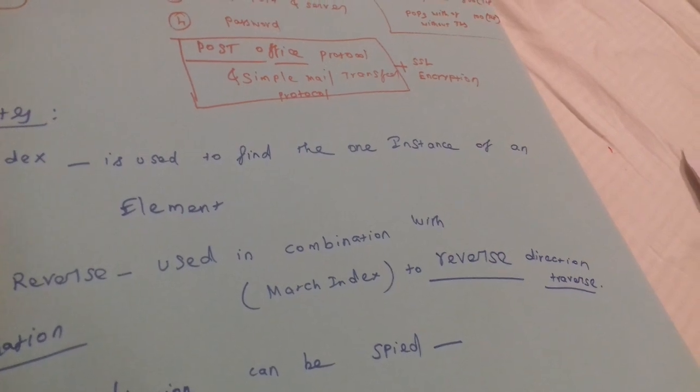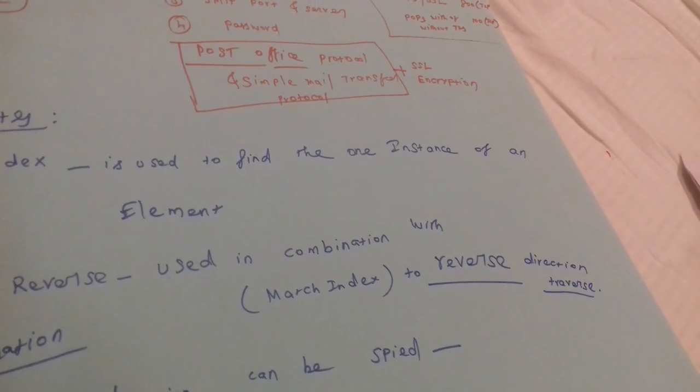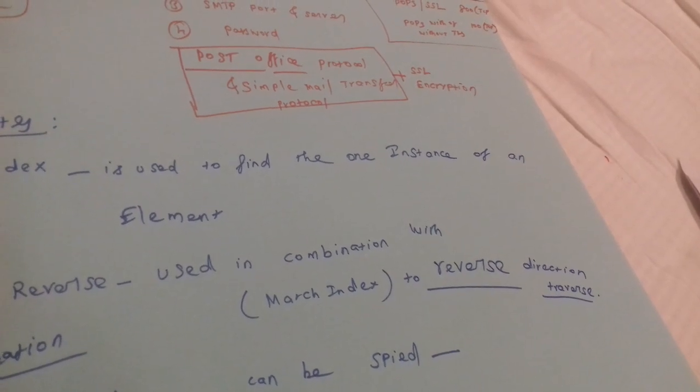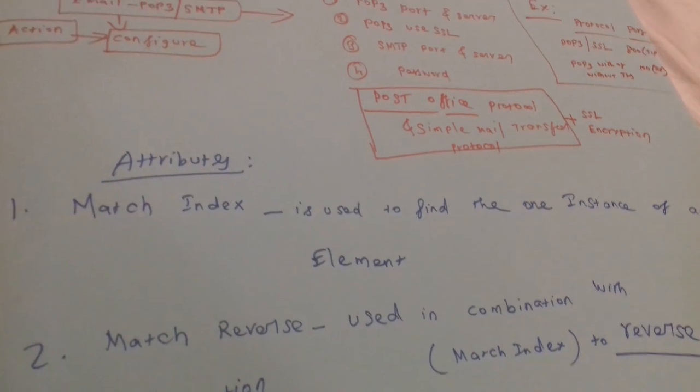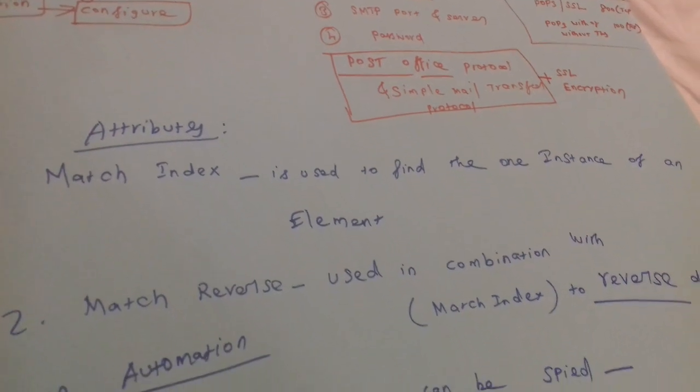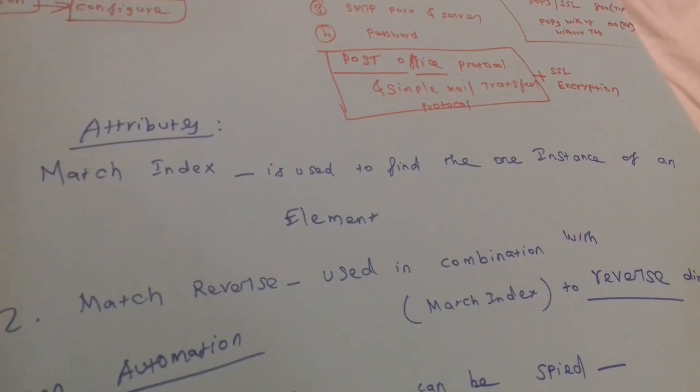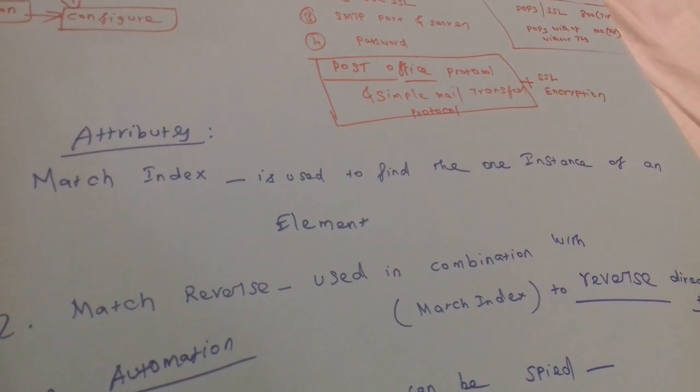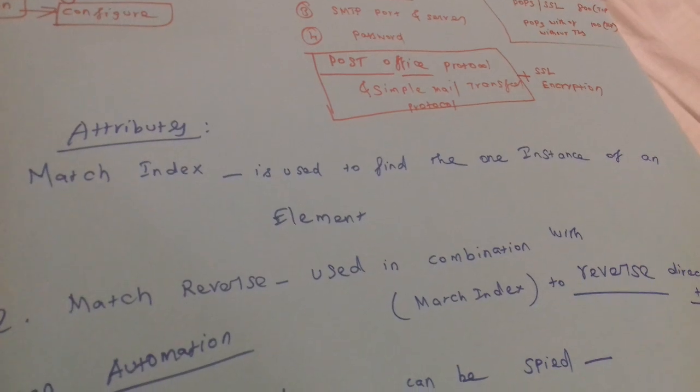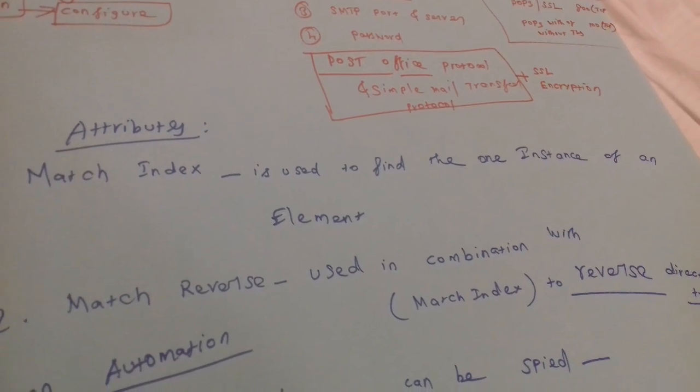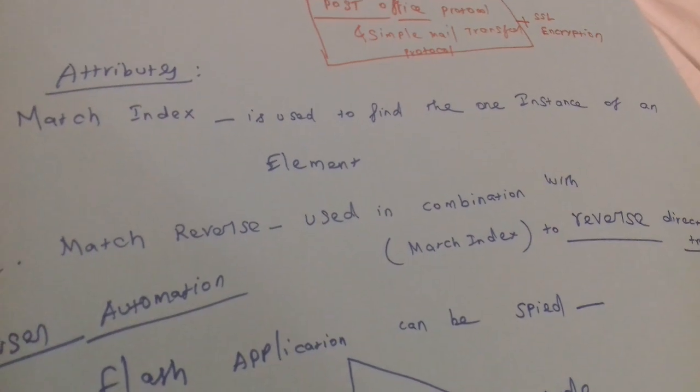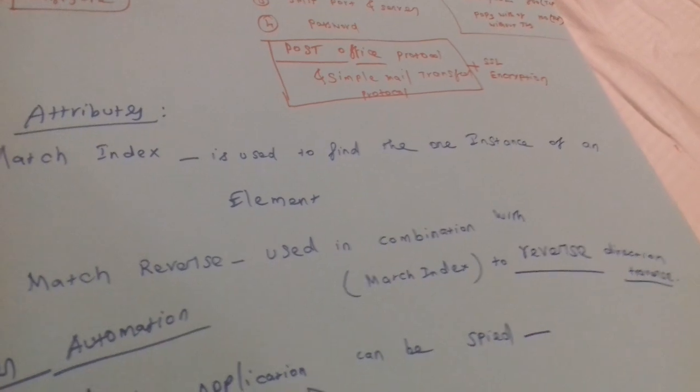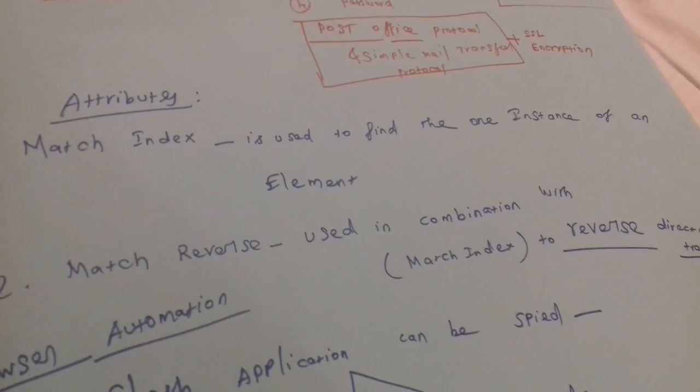with Match Index attribute to traverse in the reverse direction. Match Index, whenever you use it, when it captures or finds the first one, it will stop searching for the object. But when you use Match Reverse, it will traverse in the reverse direction to the same attribute.